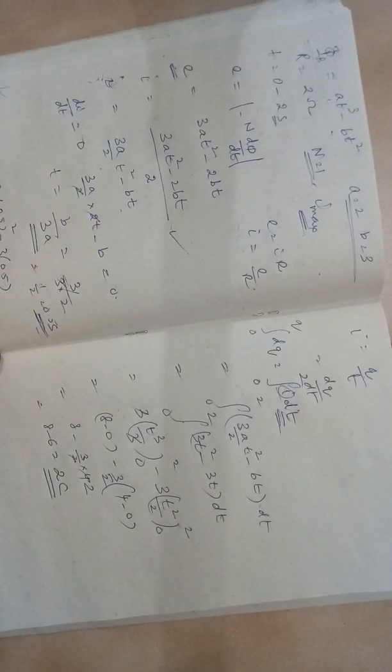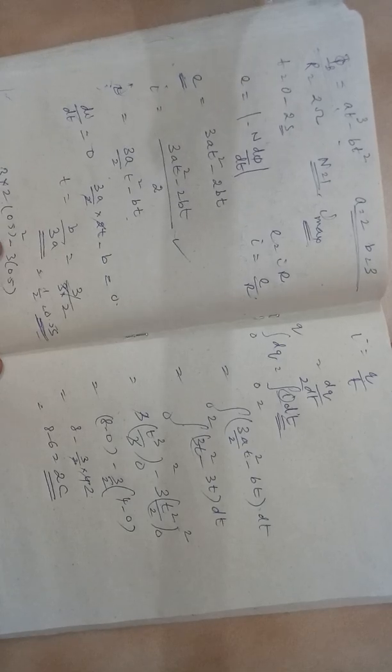2 coulombs of charge is being transferred from 0 to 2 seconds. When you get time varying functions like this, you can do the problem in this way. I know that you can go out here.